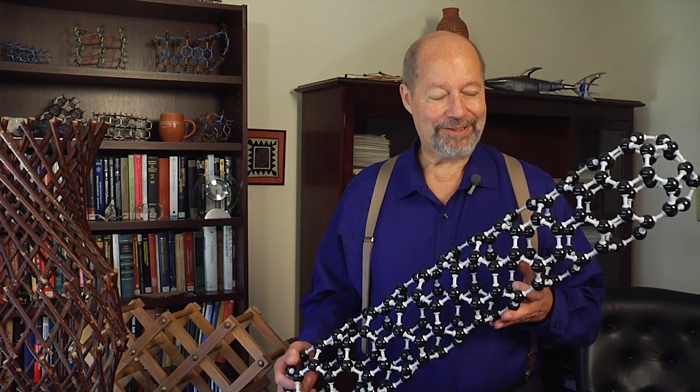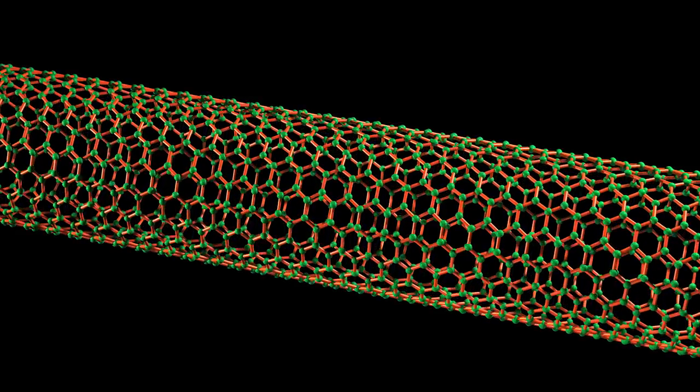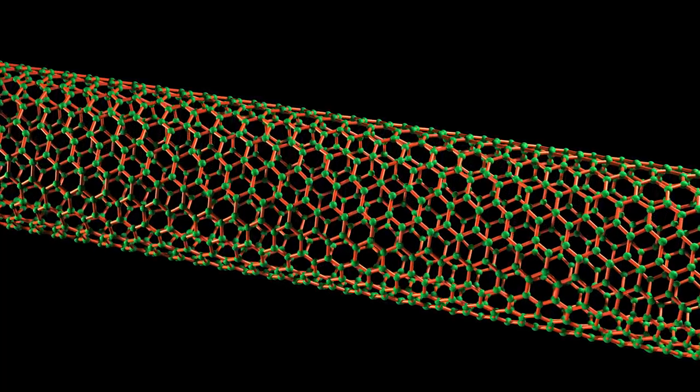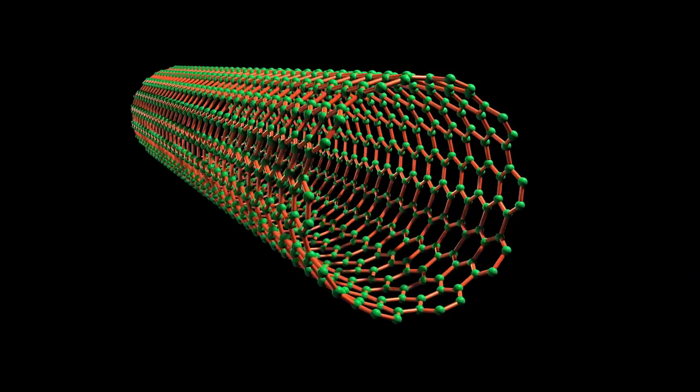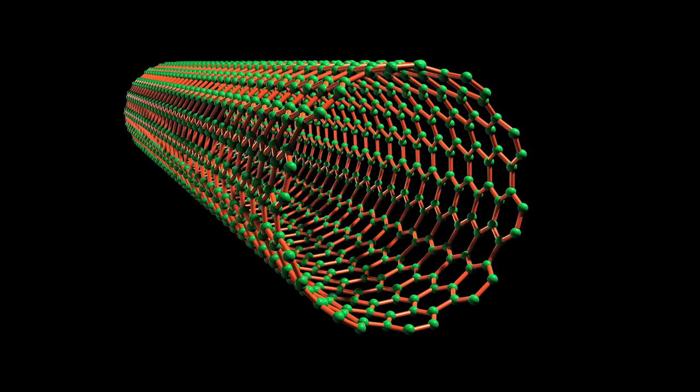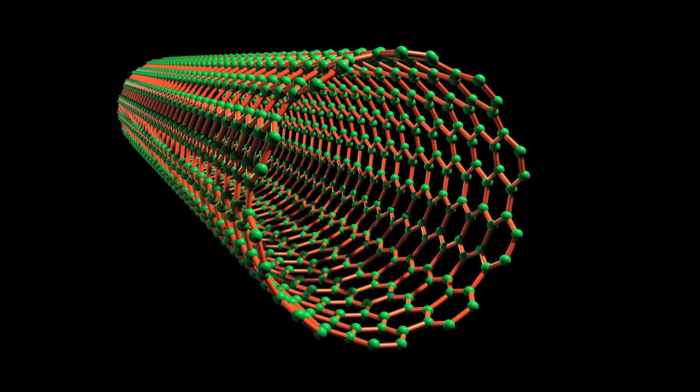Our new artificial muscles are based on carbon nanotubes. Carbon nanotubes are cylinders of carbon and the particular type of carbon is the same type of carbon that's found in graphite, like in ordinary lead pencils.